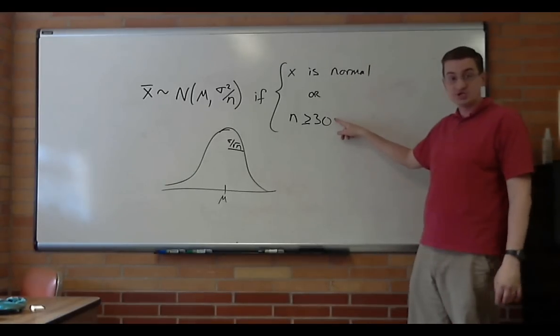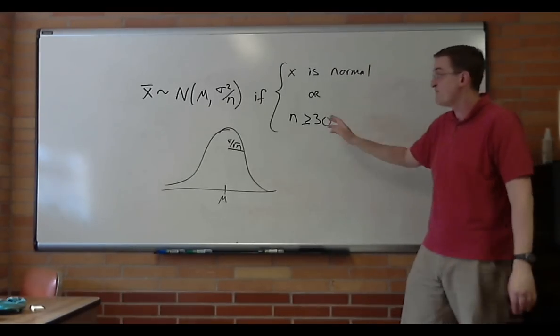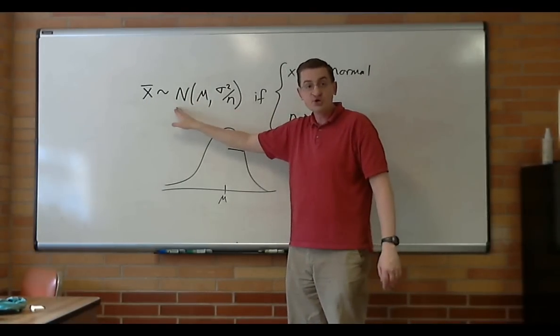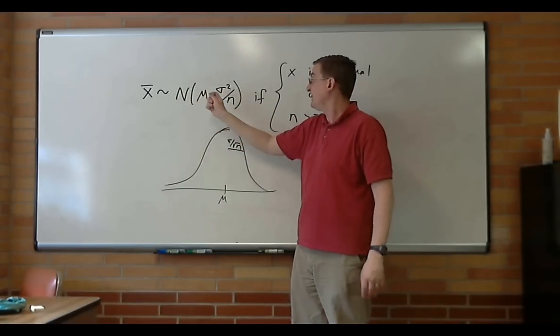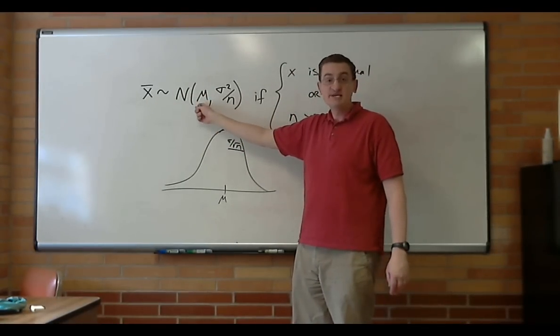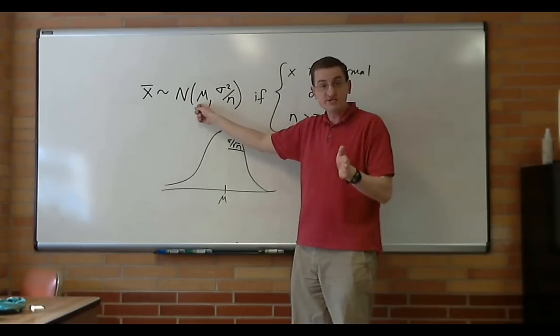So if our sample size is large enough, or if x is normal, then we can talk about the average in terms of a normal distribution. The normal distribution centered at μ, which is what we expect it should be centered at.